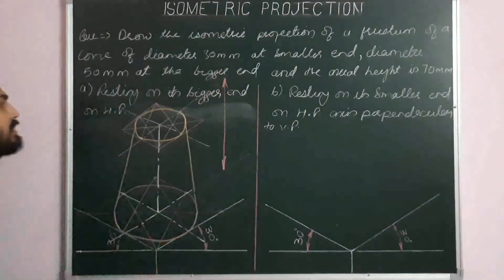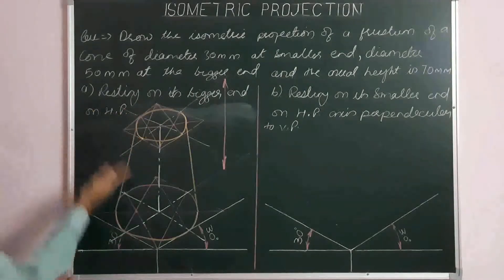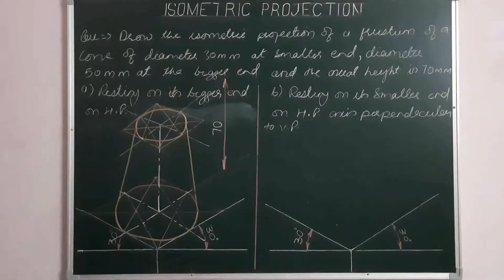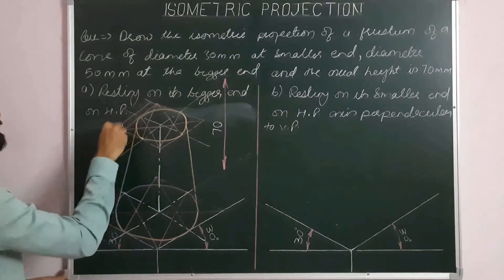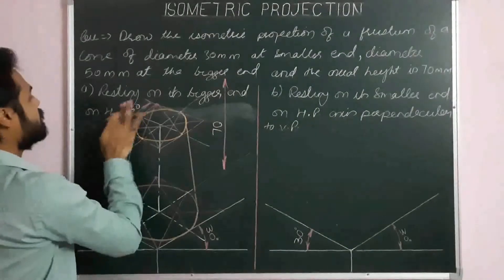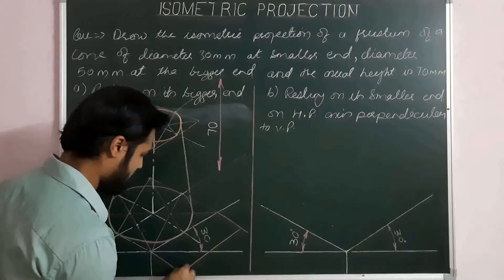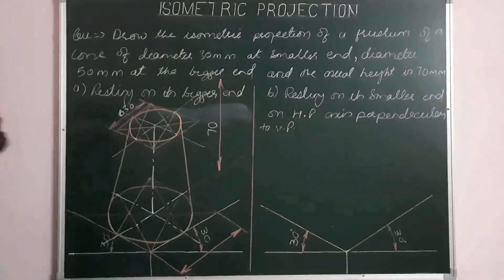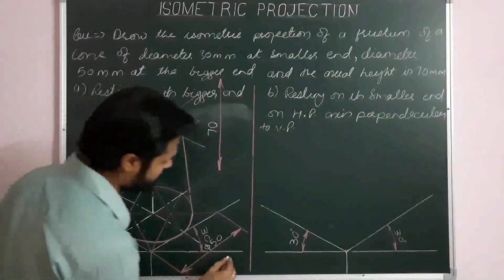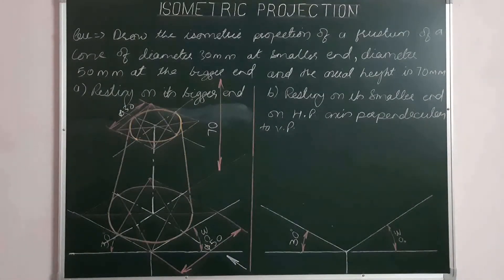For dimensioning: we draw the dimension line parallel to the solid axis, extending it parallel to the first or second iso-axis. Height is 70 mm. We also show the diameters: diameter 30 for the top cut face and diameter 50 for the bottom larger end. The direction of observation is shown from the center line. This completes the first part.